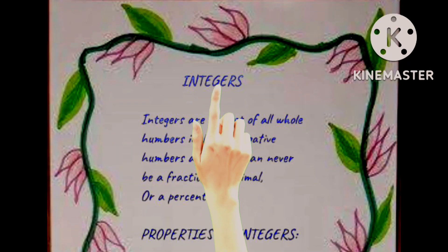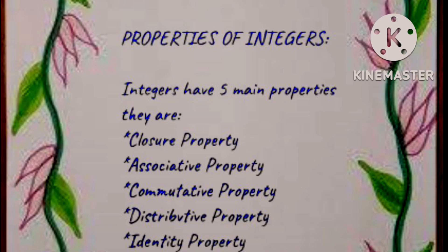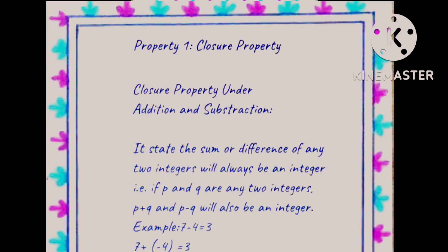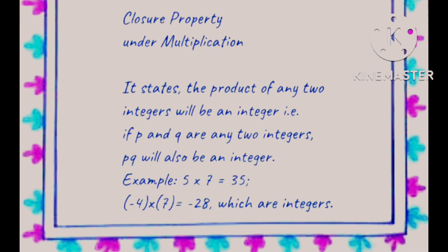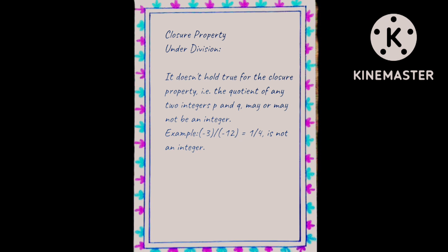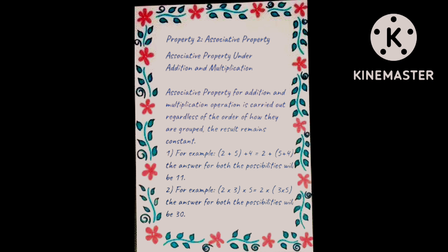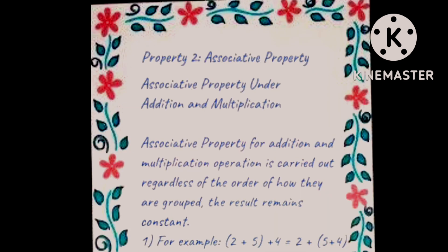The first topic is integers and information about them, then properties of integers. The first is closure property — closure property under addition, subtraction, and then closure property under multiplication and division, with information provided for each.